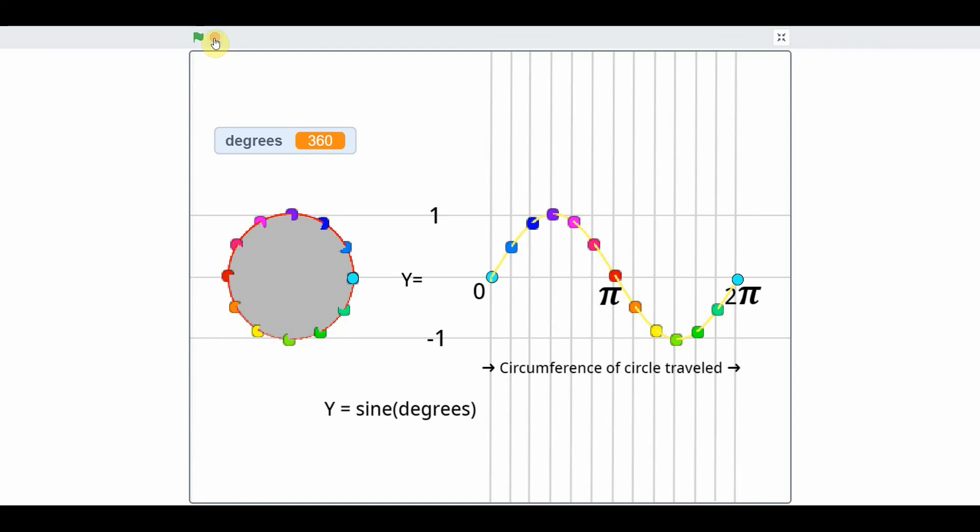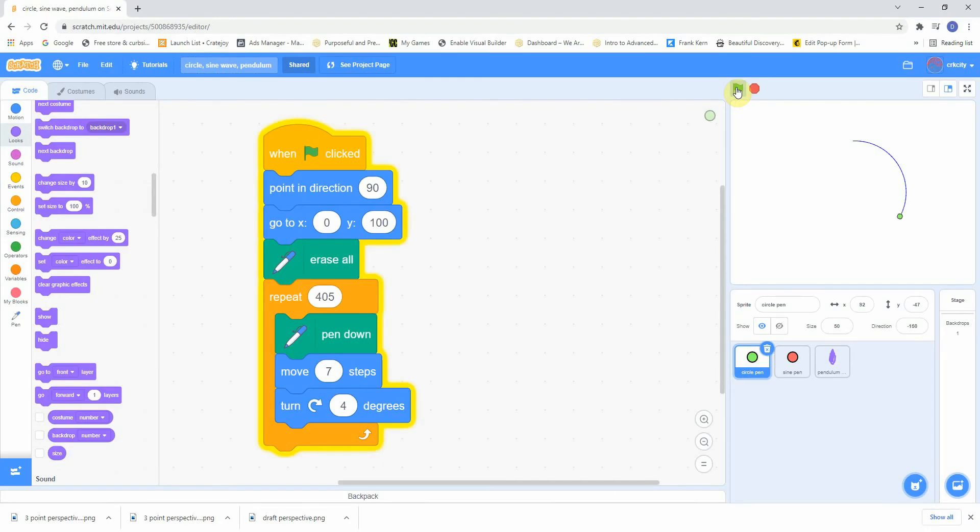So let's try this in Scratch. That's where I made this program you're looking at. Just trace out a circle by turning and moving. That's the command, basically just turning and moving.